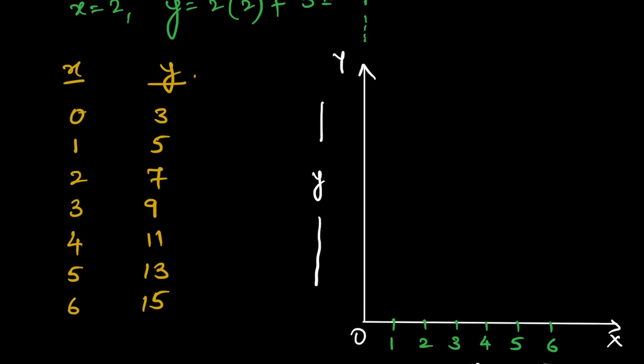When looking at the Oy axis to plot the values of y, always keep two things in mind. First, look at the greatest number — here it is 15 — and make sure it fits on the Oy axis. Second, divide it into equal proportions. There are two ways: I can take multiples of 2 up to 16, or multiples of 3 up to 15. I am going to choose multiples of 3: 3, 6, 9, 12, 15.